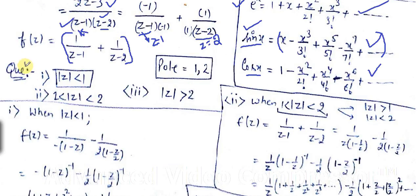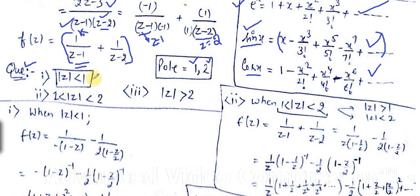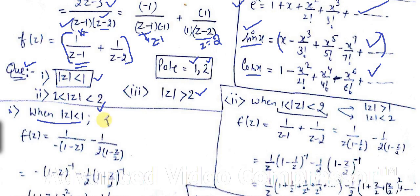The poles are located at z = 1 and z = 2. There are three cases: |z| < 1, |z| > 2, and 1 < |z| < 2. We need to decide which gives a Taylor series and which gives a Laurent series. When |z| < 1, we are inside the circle — this is the Taylor series case.